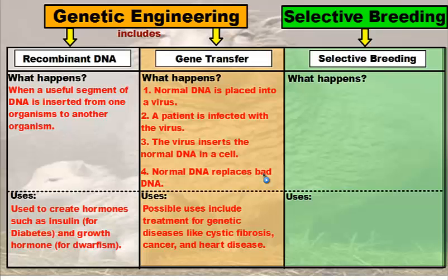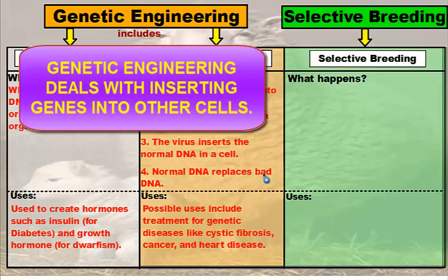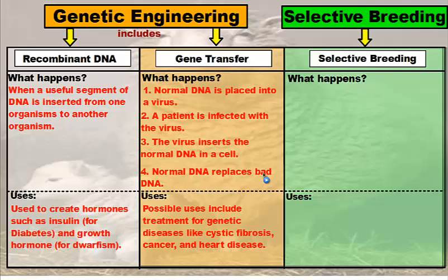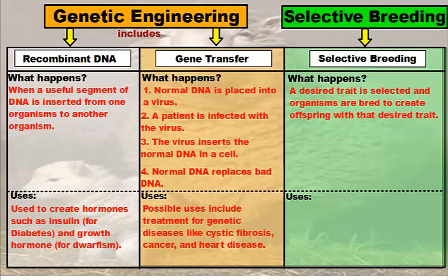So that was gene transfer — hopefully that cleared things up a little bit. Now, we're going to move on to selective breeding in a moment, but first I want to go over the differences between genetic engineering and selective breeding and an easy way to remember the difference. Genetic engineering has the word gene in it. If you think about recombinant DNA — the splicing of a gene into bacterial DNA — or gene transfer, where we take a gene from normal human DNA and put it into a virus so that gene replaces a bad gene, everything has to do with a segment of DNA being put someplace else. In selective breeding, that doesn't happen.